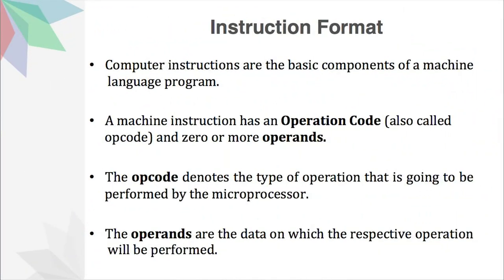What is an instruction? Computer instructions are the basic components of a machine language program. The machine instruction has an operation code, which is most commonly known as an opcode, and zero or more operands. The opcode defines the type of operation that is going to be performed by the microprocessor. The operands are the data on the basis of which the respective operation will be performed.